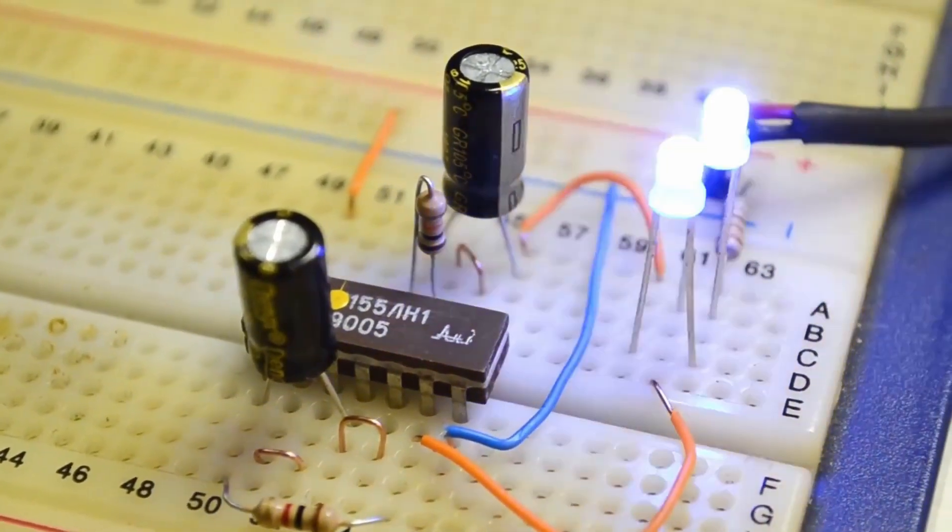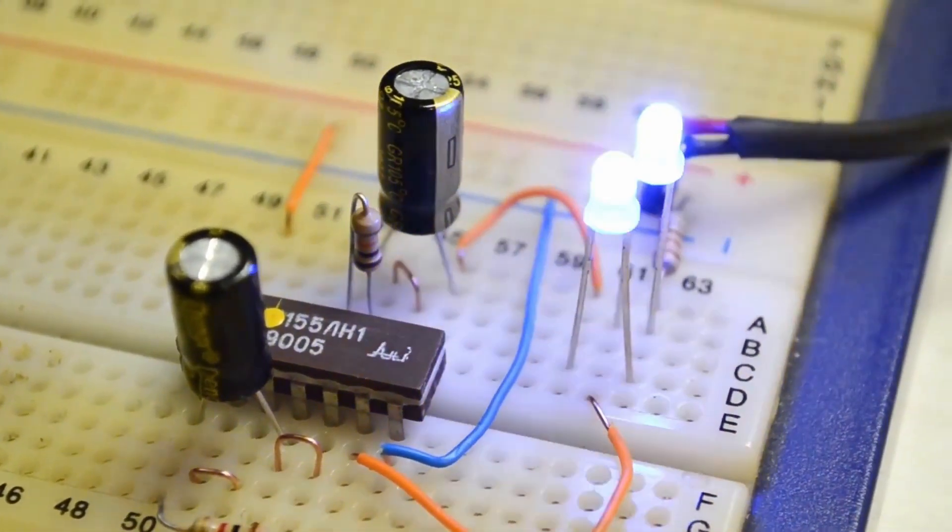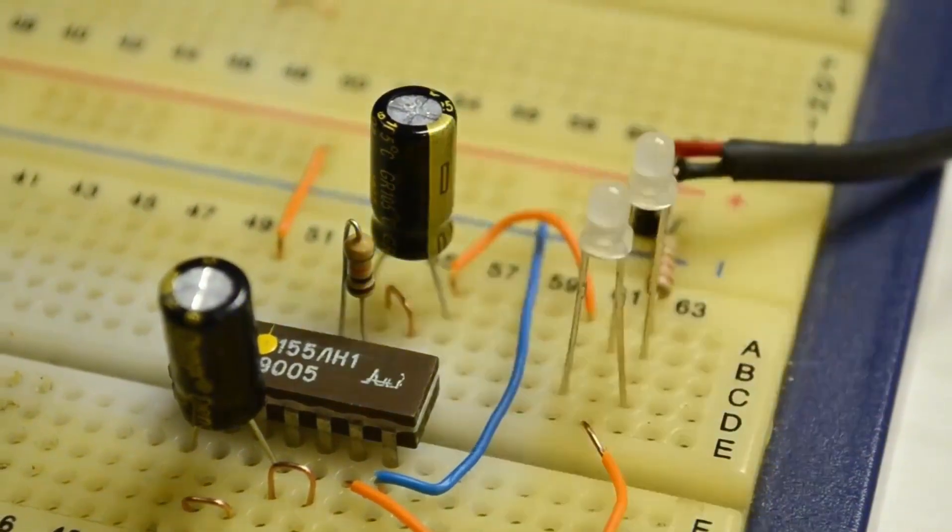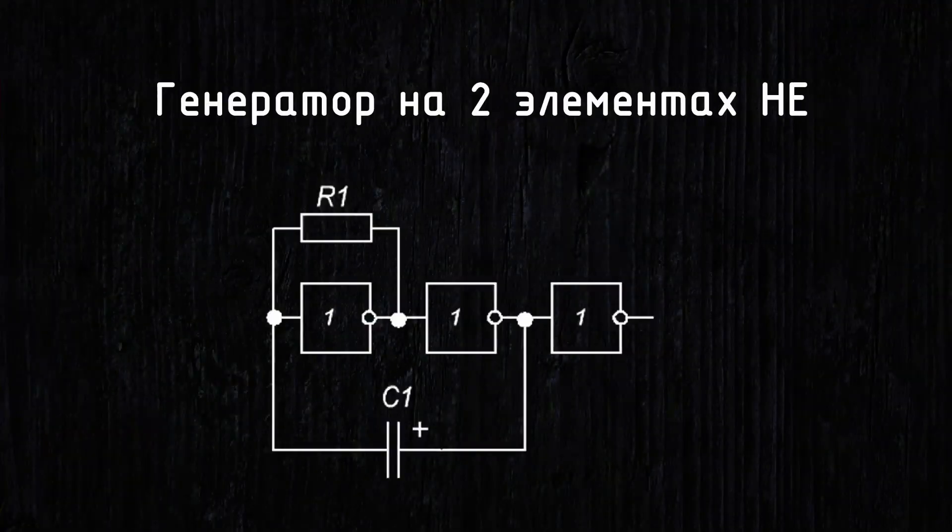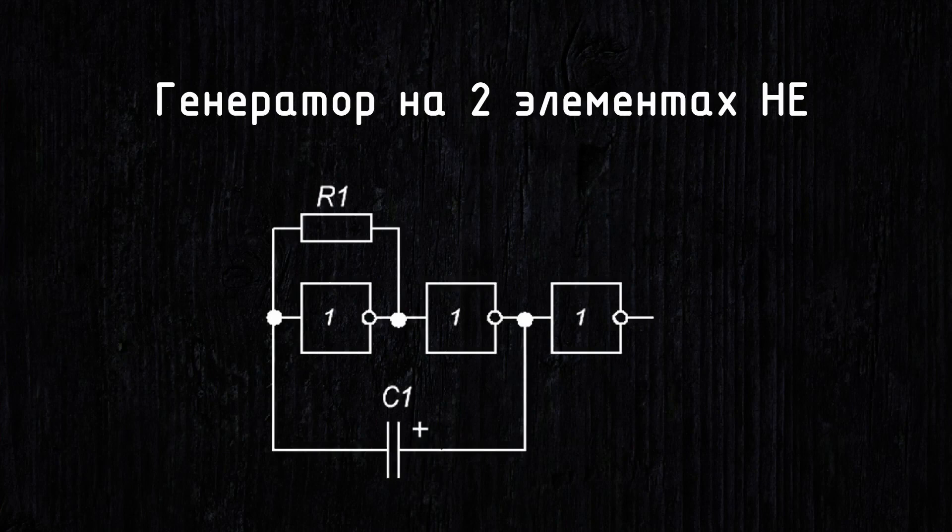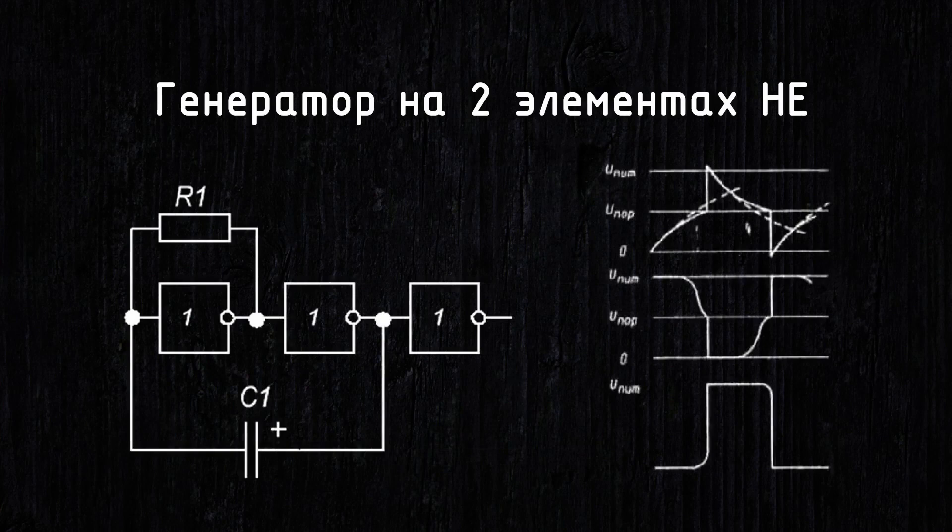It is also worth noting that unlike the first circuit, the two-element circuit does not require these elements to be in the same chip to minimize the threshold variation of the inverters. The principle of generation here is also based on the charging and discharging of a capacitor, which adds inertia to the feedback.